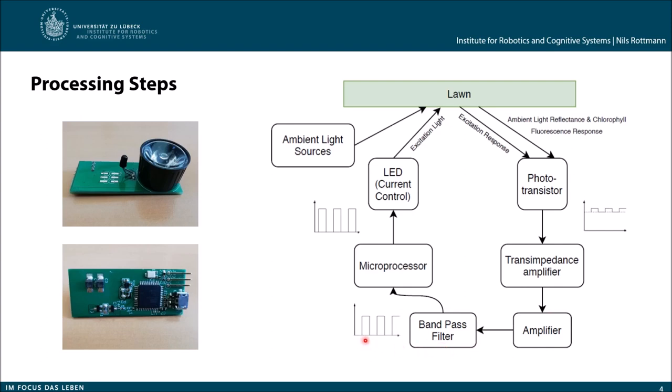We get our nice pulsing signal with these rectangles back. This clean signal we send back to our microprocessor where we can detect it and say, okay, we really get a chlorophyll fluorescence response. That's the general idea and signal path loop for our sensor.